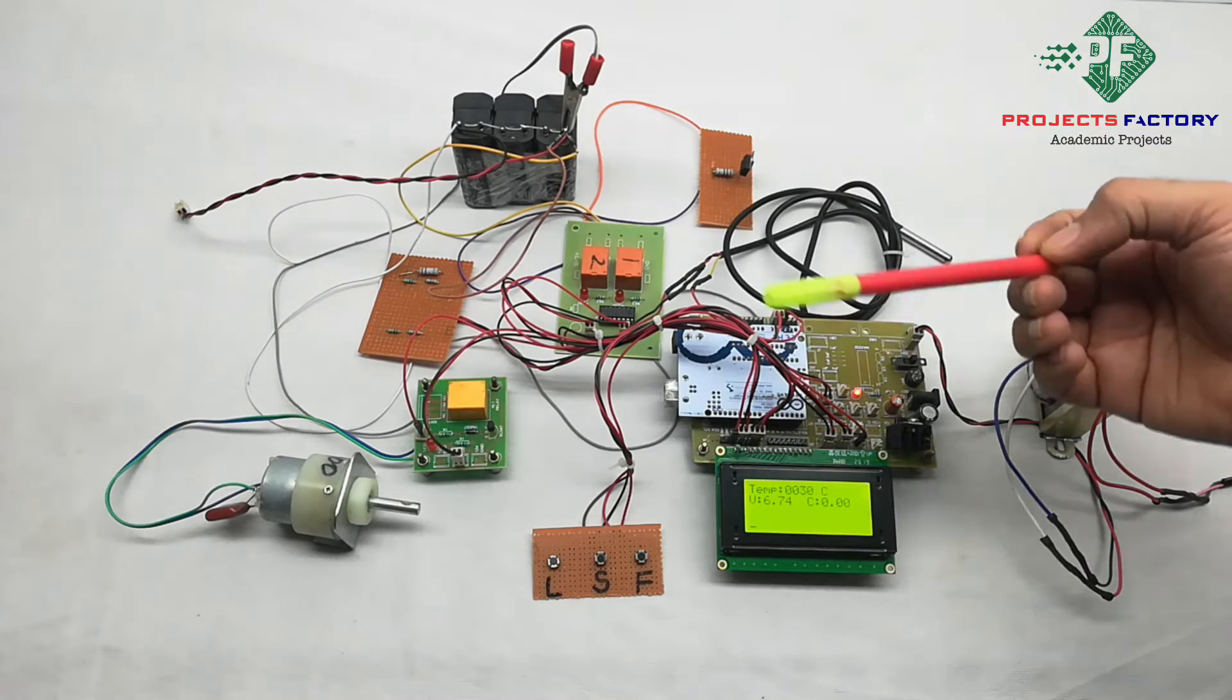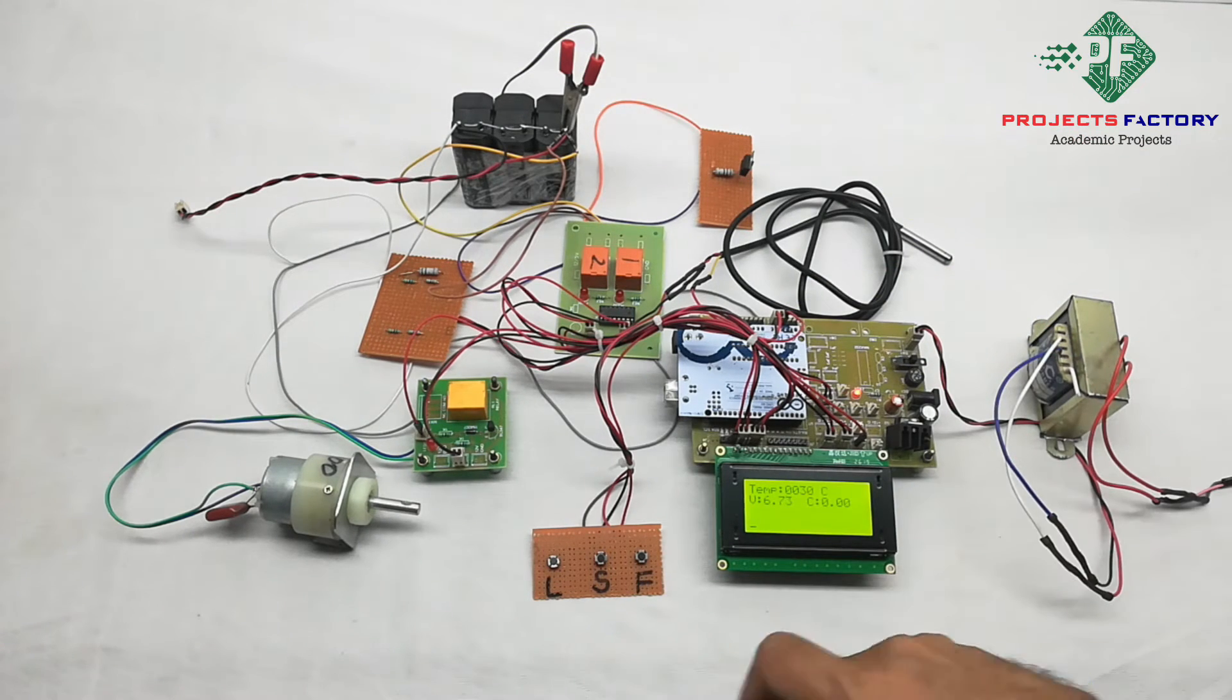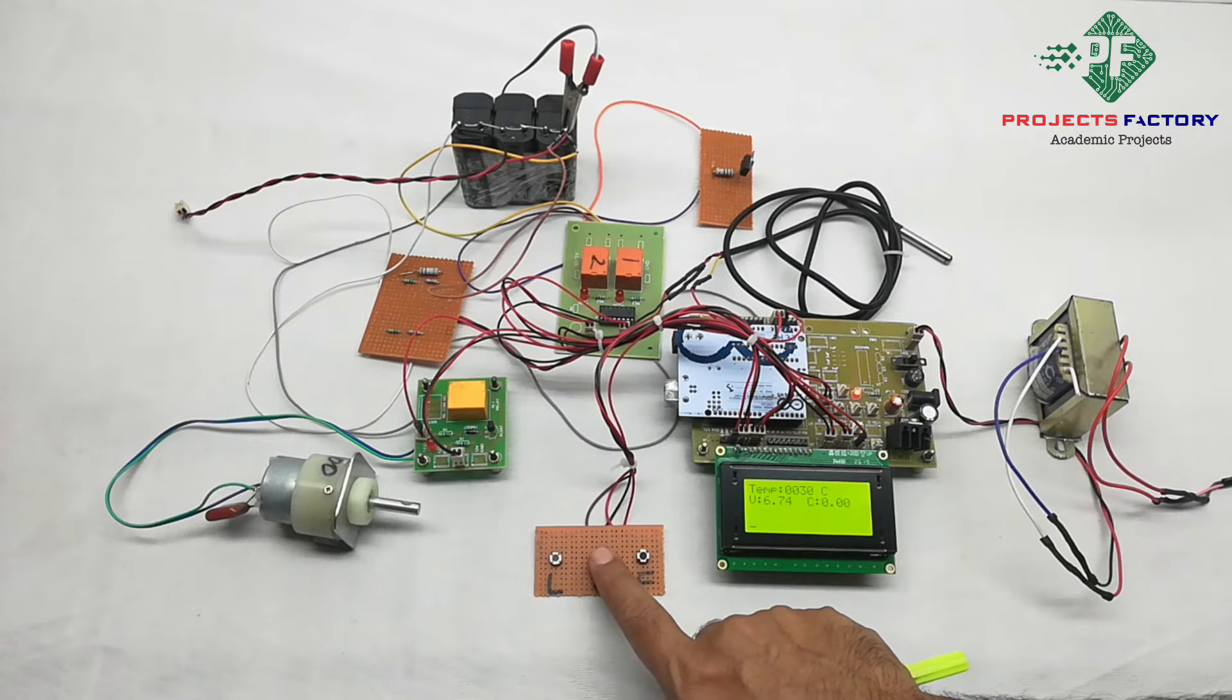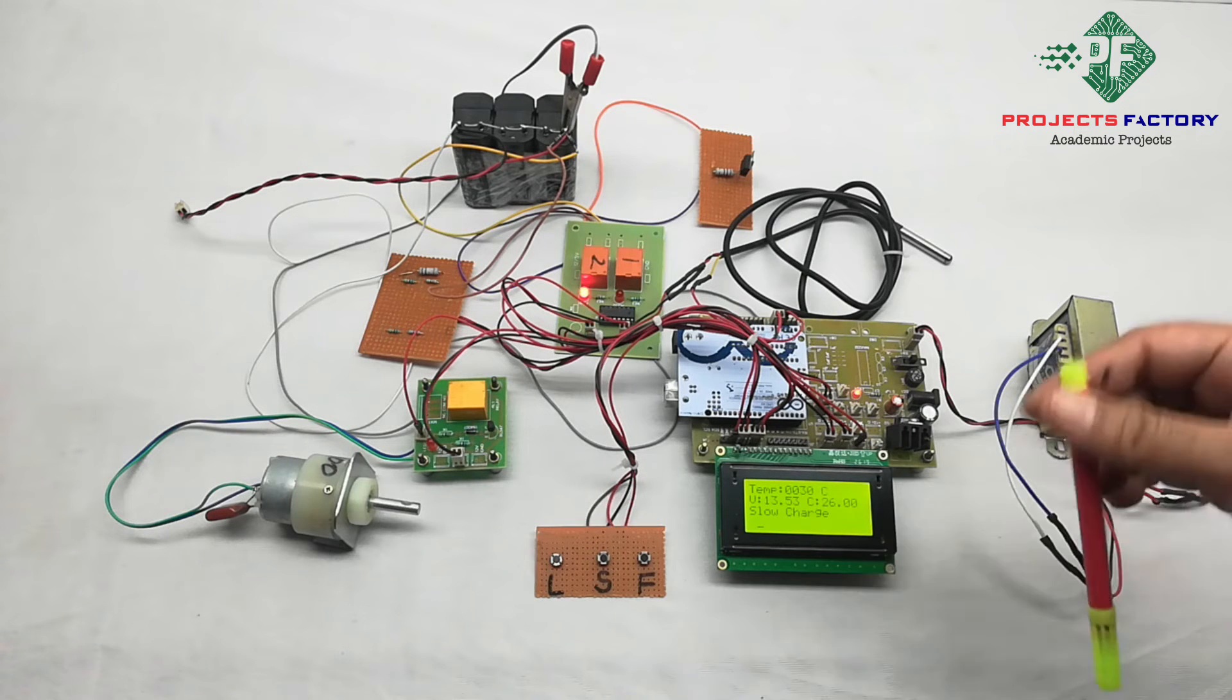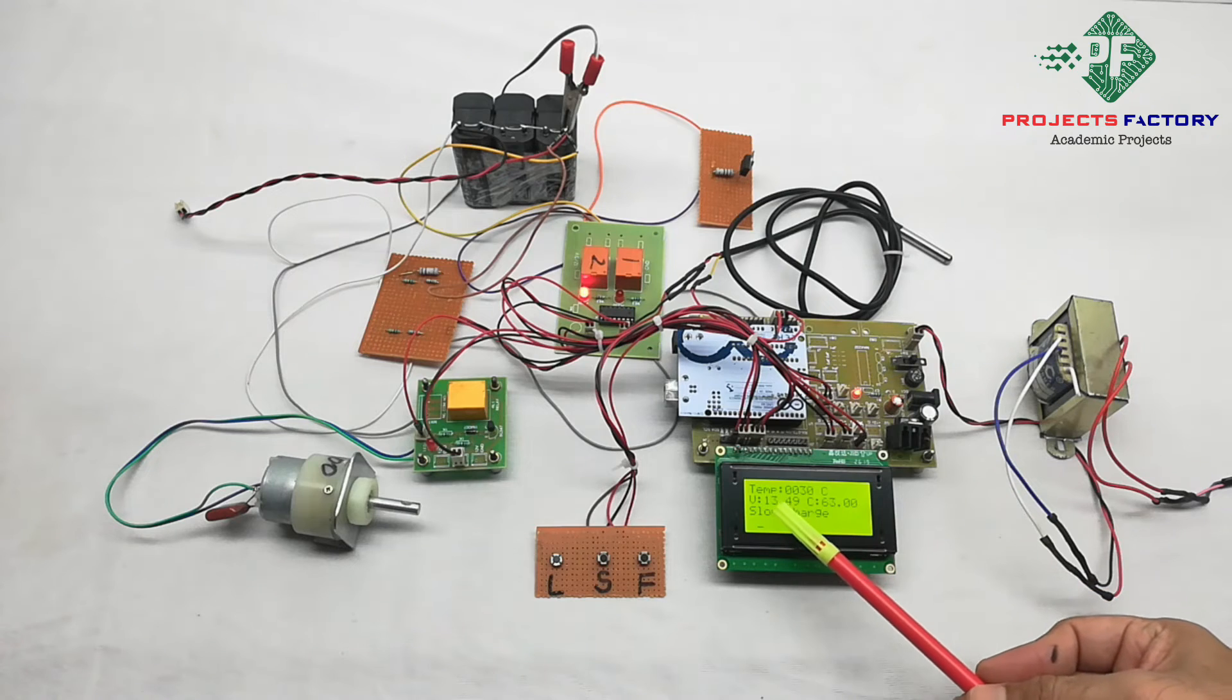This is the universal phenomenon of any battery while charging, whether it is lead acid or lithium ion or anything. Now we will see slow charging. Now it is in slow mode, that's why the voltage of the battery is also increased up to 13 and 14.